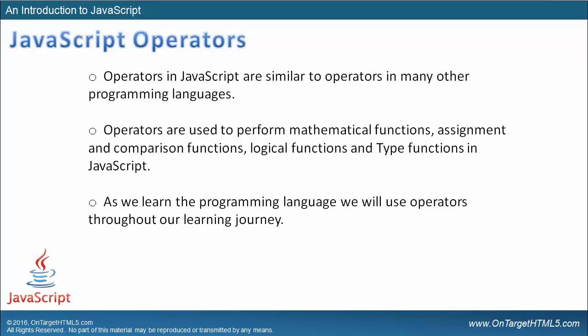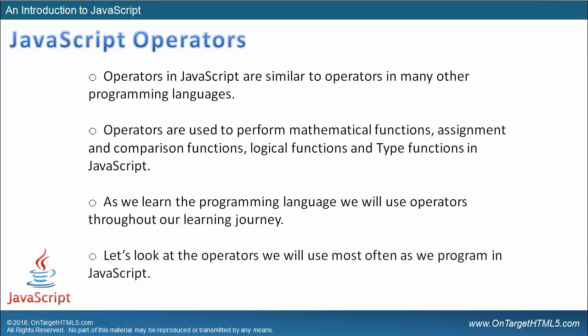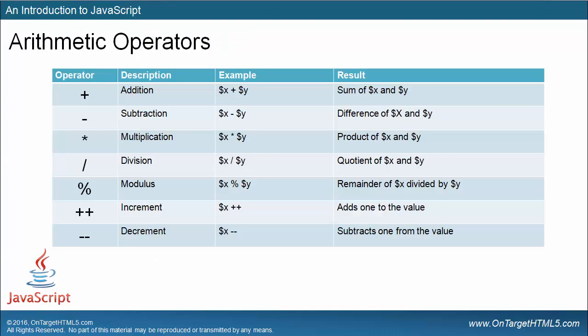Let's look at the operators we use most often as we program in JavaScript. This first chart shows the arithmetic operators. The plus sign does addition — it adds the sums of values together. We have a subtraction operator which gives us the difference of values, a multiplication operator which is the product of values, and a division operator which is the quotient of values.